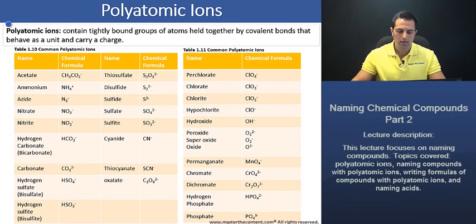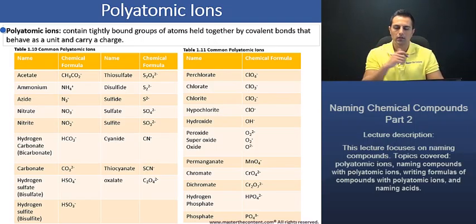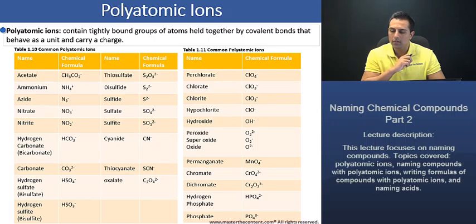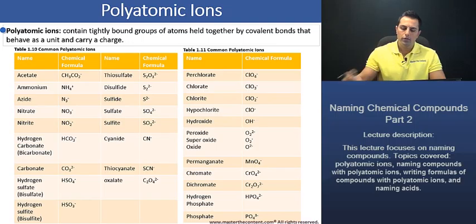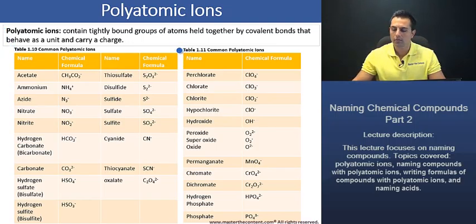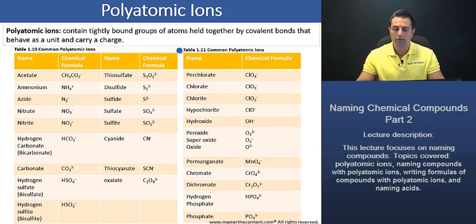Polyatomic ions. Let's begin with a definition. Polyatomic ions contain tightly bound groups of atoms and are held together by covalent bonds that behave as a unit and carry a charge. Now, in table 1.10 and table 1.11, we're given the common polyatomic ions. The bad news with polyatomic ions is that there is no system to name them as we had with binary compounds. Thus, you're just going to have to memorize the most common ones.